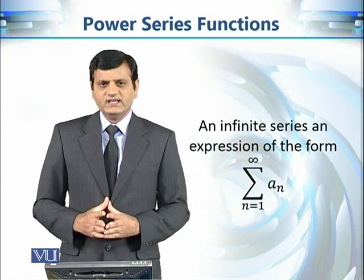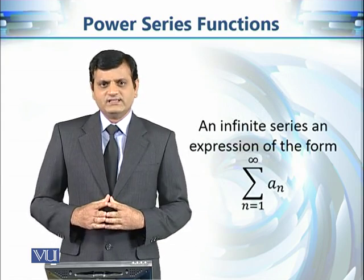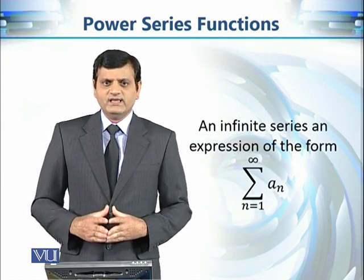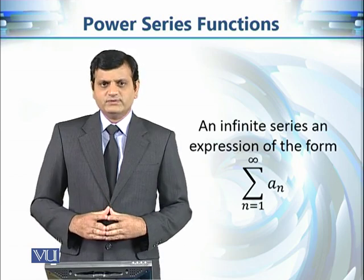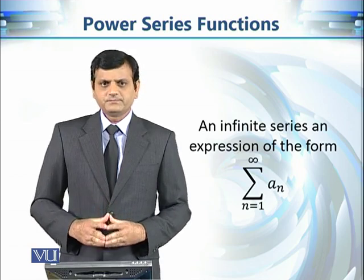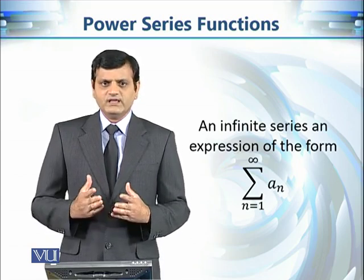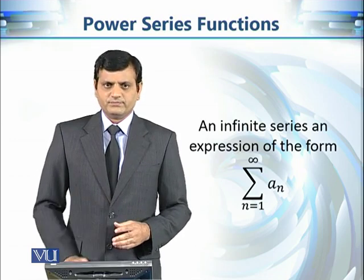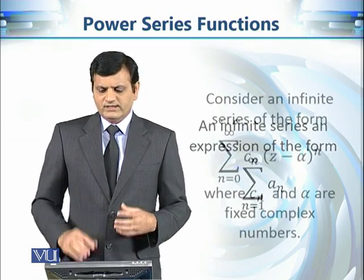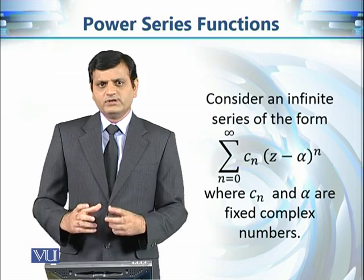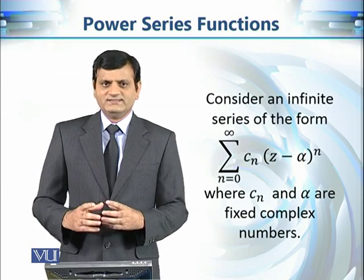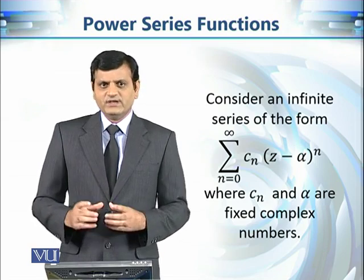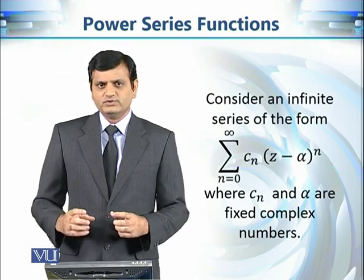An infinite series is an expression of the form Σaₙ, where n goes from 1 to infinity, and the terms of the series are a₁, a₂, a₃, and so on. Now let's consider a very particular example of an infinite series where we change the terms to be cₙ(z − α)ⁿ.